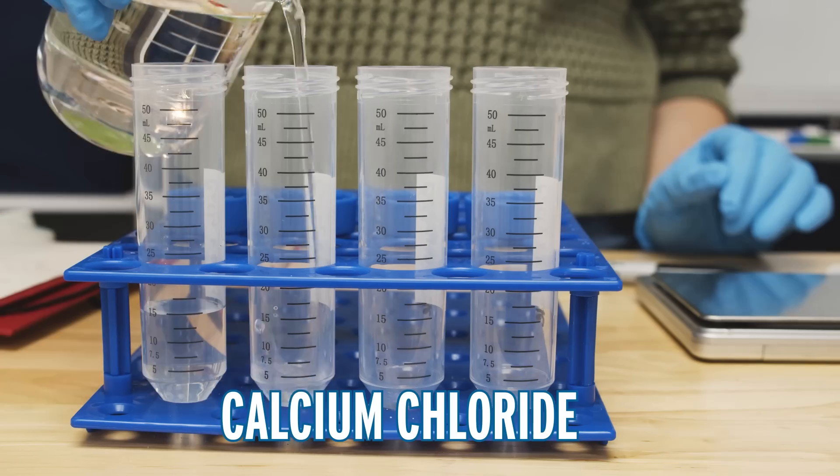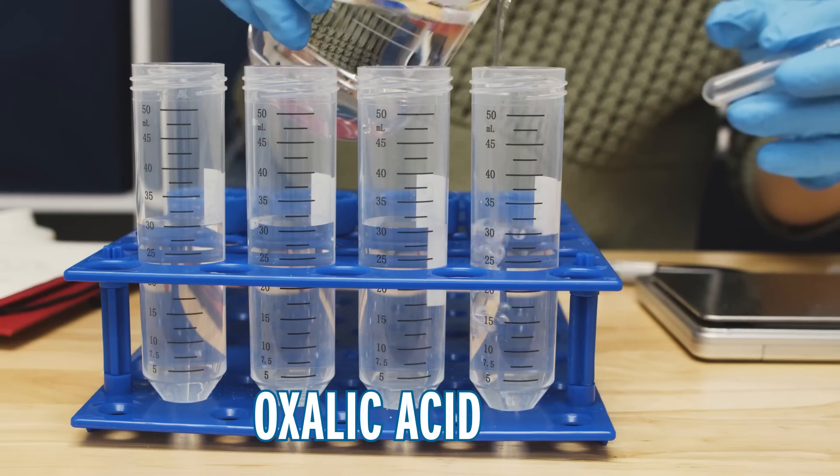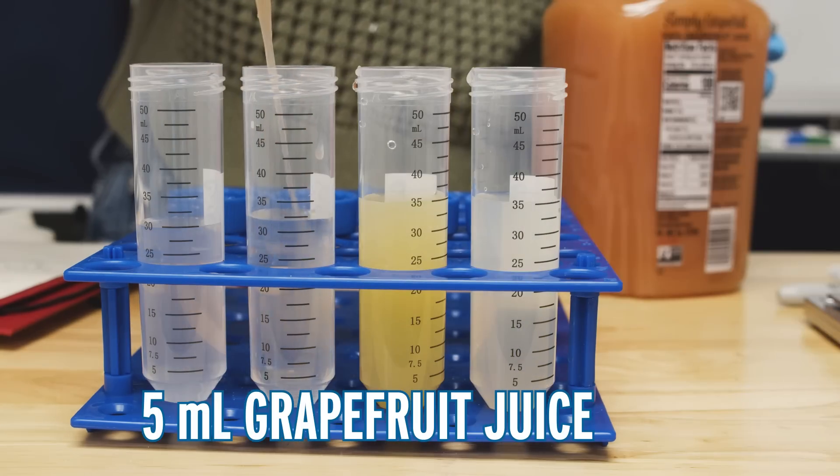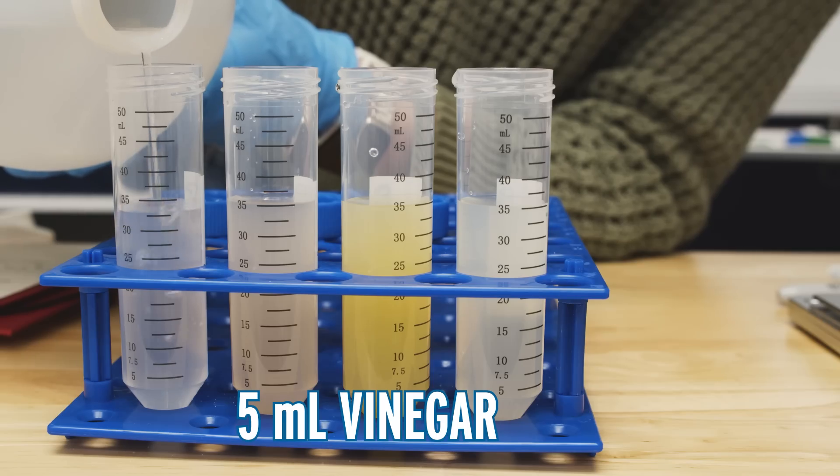So obviously I ran this experiment three more times. I have equal parts calcium chloride and oxalic acid in these tubes and then I added lemon juice, grapefruit juice, and orange juice. And to prove that it is not just acid that makes the difference, I also made one with vinegar.